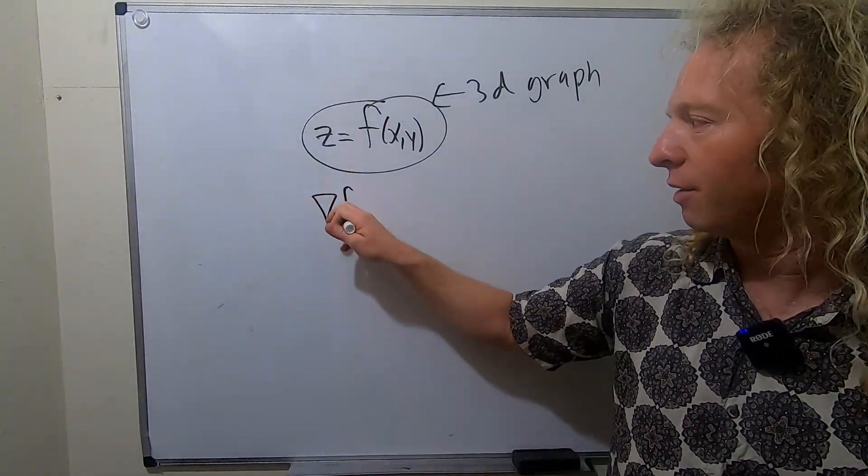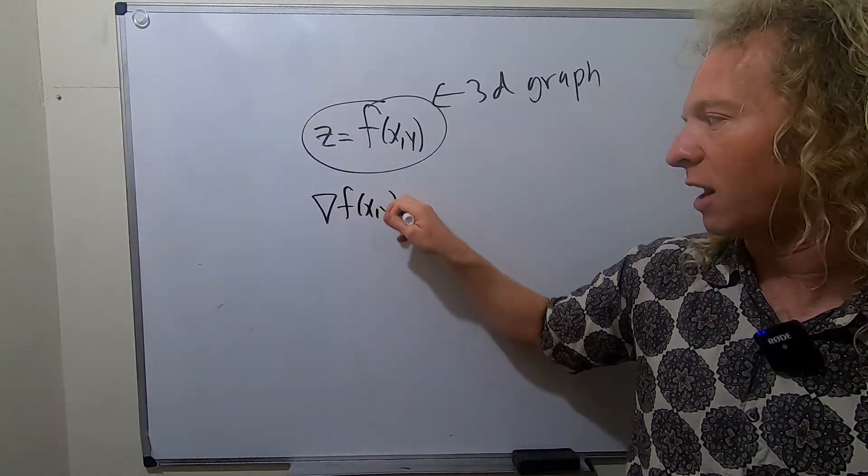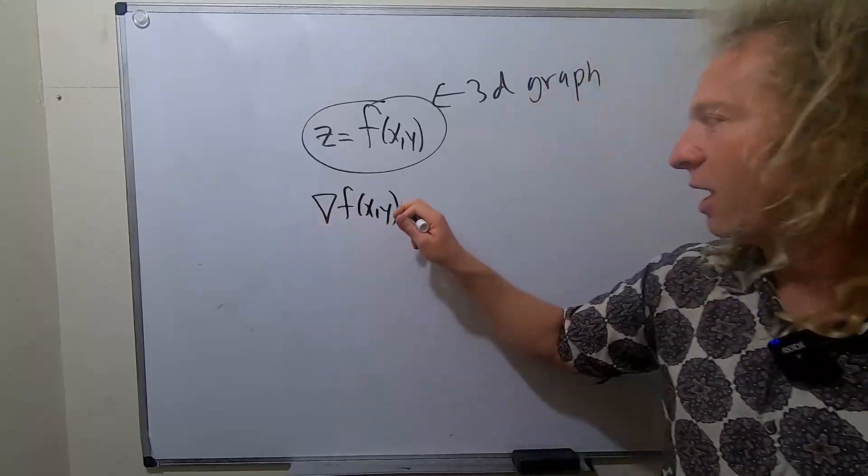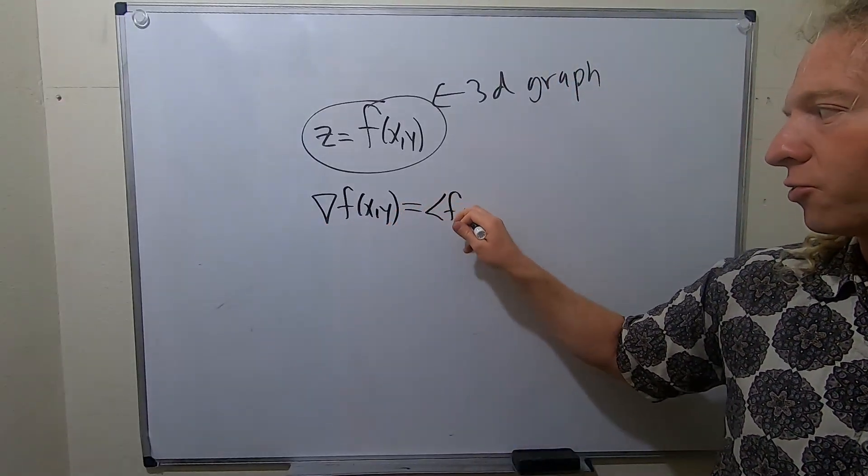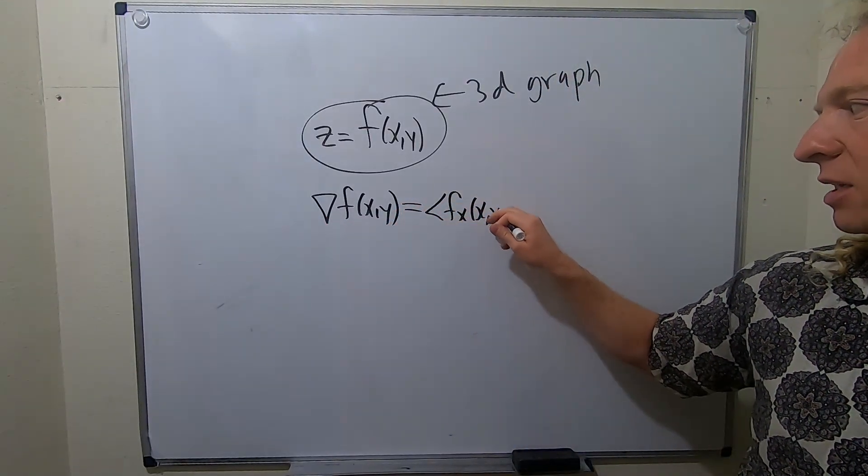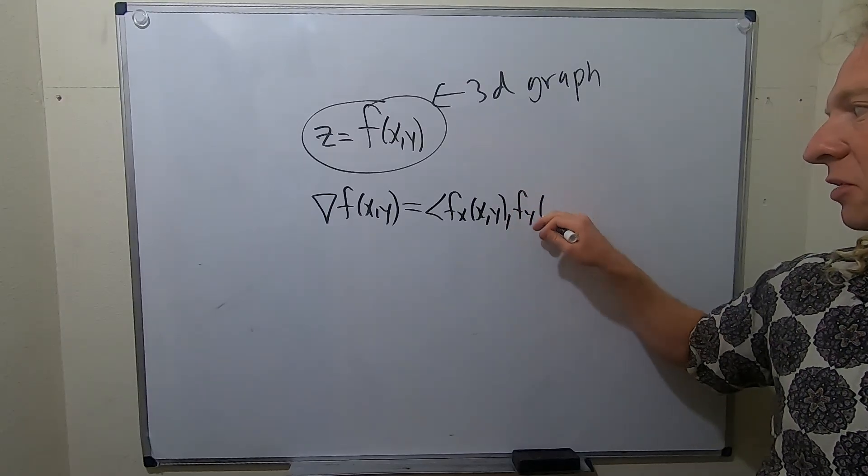The gradient is a vector. It's del f of x, y. That's how you read that, D-E-L. And it's the vector of first-order partial derivatives. So, it's the partial with respect to x, the partial with respect to y.